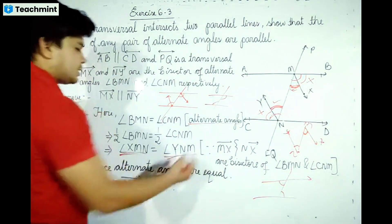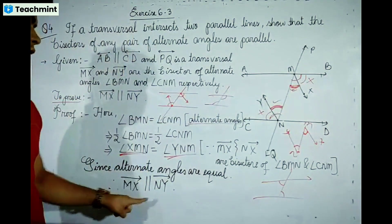If you have a transversal and the alternate angles are equal on the other side, then since the alternate angles XMN and YNM are equal, the lines MX and NY are parallel. Therefore, MX is parallel to NY, which is what we needed to prove.